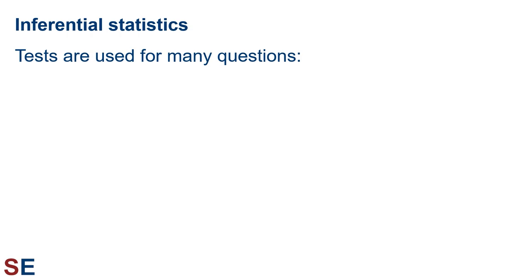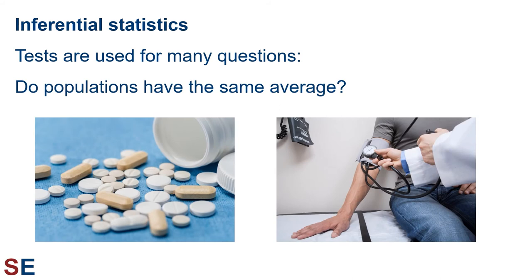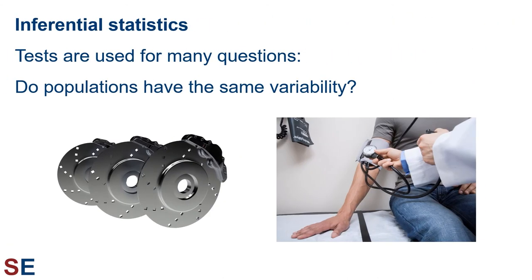Statistical tests are used for lots of questions — way more than I can list here — but let's think about a few. The example we just looked at was asking if two populations have the same average. We looked at an example of the sizes of eggs in two populations, but there are also tests for more than two. For example, do pills manufactured in five different factories all have the same average amount of active ingredient? Do people in all 50 states have the same average blood pressure?